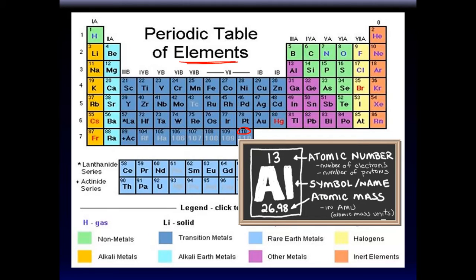There's a key that tells you what each number means. Two things you must know: first is the atomic number — it's like a serial number for the atom. It equals the number of protons in the atom. Aluminum's atomic number is 13, meaning it has 13 protons. Carbon's atomic number is 6, meaning it has 6 protons.